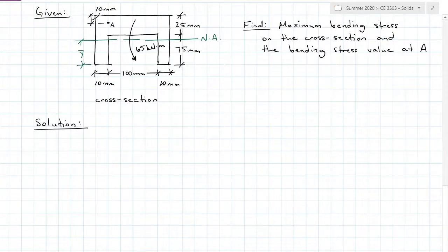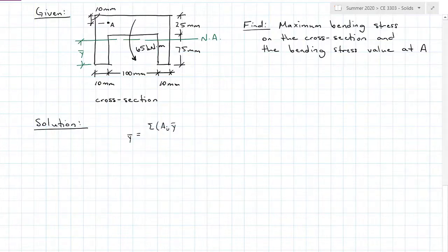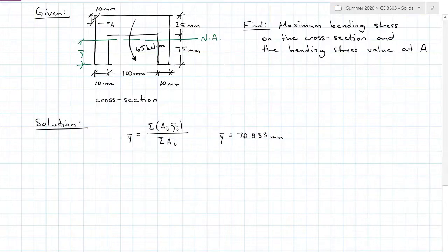In this case, we're given a cross section with a negative moment of 65 kilonewton-meters. I know it's negative because there's compression in the bottom. I want to find the maximum bending stress on the cross section and the bending stress at point A, which is 10 millimeters from the top. This cross section is not symmetric about its horizontal axis, so the first thing we need to do is find where the neutral axis is using the composite body method for finding a centroid. Y-bar equals the sum of each area times its centroid, all over the sum of the areas, and we find that Y-bar equals 70.833 millimeters.